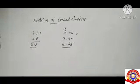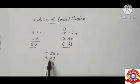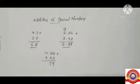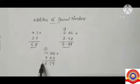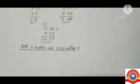The third question is 17.56 plus 9.23. In the decimal part: 6 plus 3 is 9, 5 plus 2 is 7. In the whole part: 7 plus 9 is 16 — write 6 and carry 1, so 1 plus 1 is 2. The answer is 26.79.